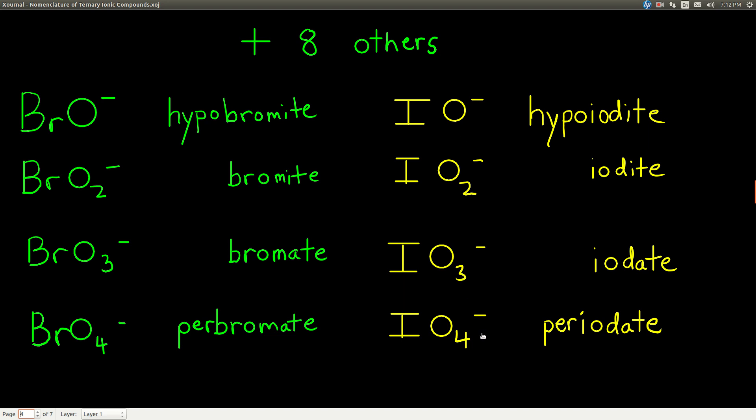And the same pattern is followed for iodine. Hypoiodite, iodite, iodate, periodate. All 1, 2, 3, or 4 oxygens, all negative 1 charges. The names still follow the same pattern. So memorize these guys too.